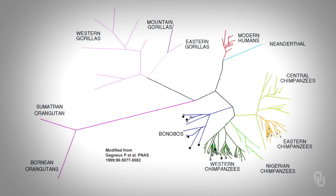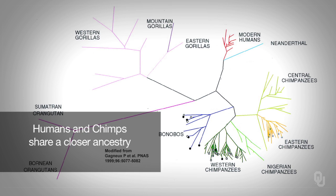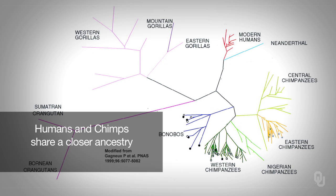From the tree we can see that humans are the chimpanzees' closest living cousins. In other words, humans and chimps share a more recent common ancestor than either do with gorillas.